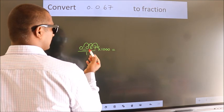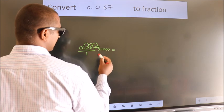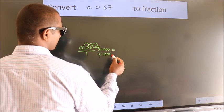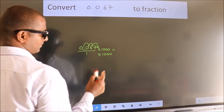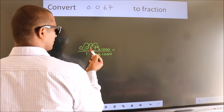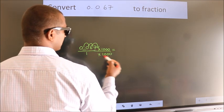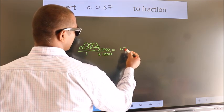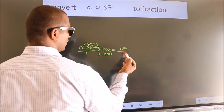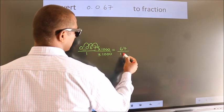Whatever we are multiplying in the numerator, in the denominator also we should do the same. So 0.067 into 1000, we get 67 in the numerator. In the denominator, 1 into 1000 gives us 1000.